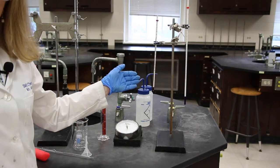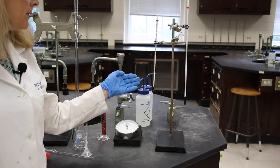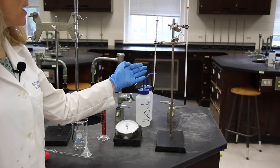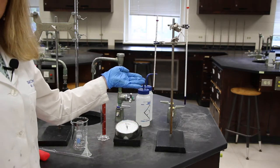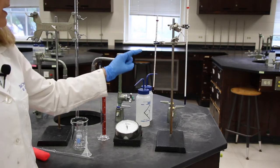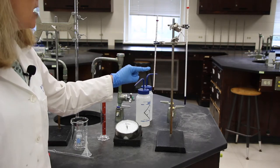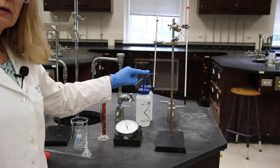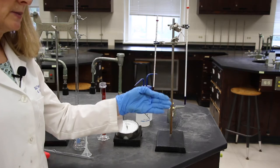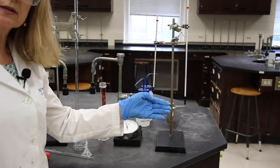The first set of equipment that we're going to learn how to read properly are the thermometers. The first thermometer on the left is from minus 20 to 110 degrees Celsius. If you'll look carefully, the smallest marking is one degree Celsius. So we're going to estimate to the next digit, which is the tenths.